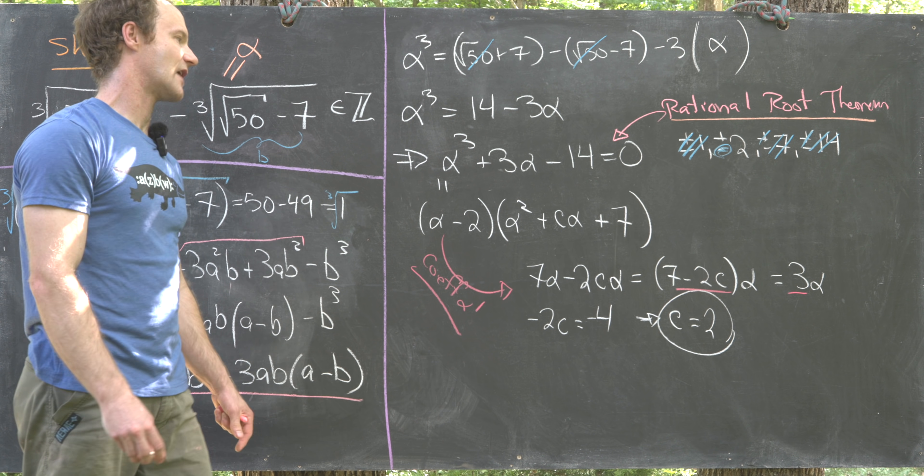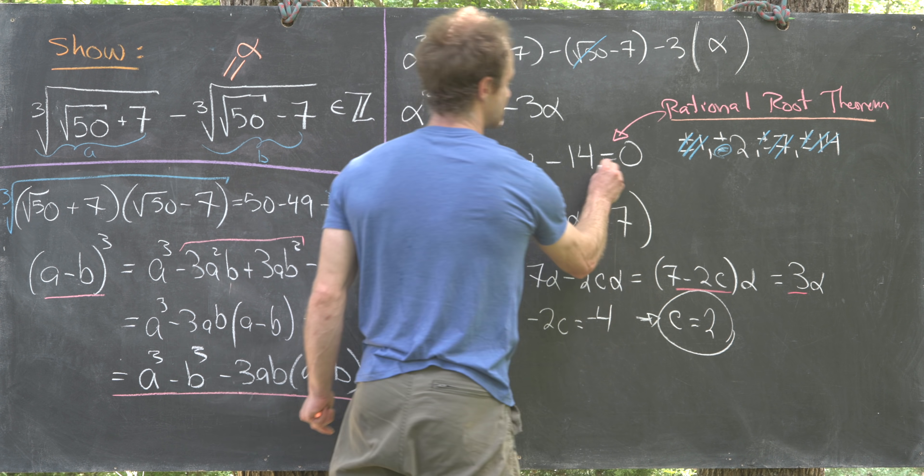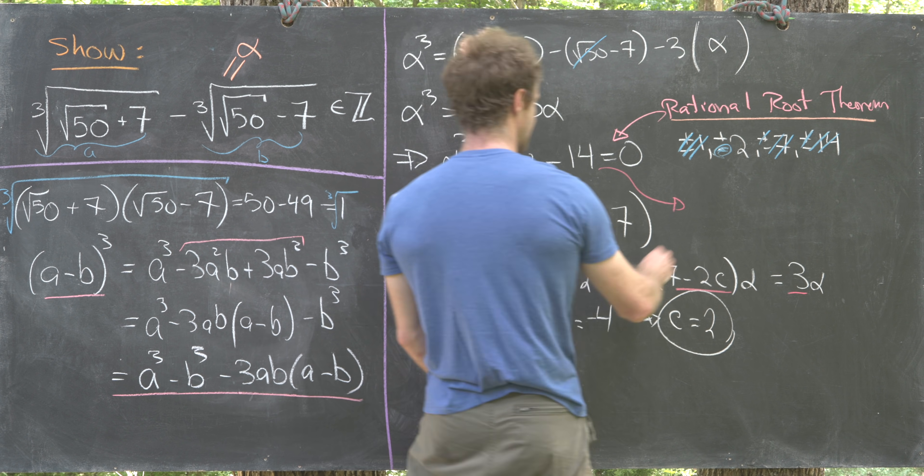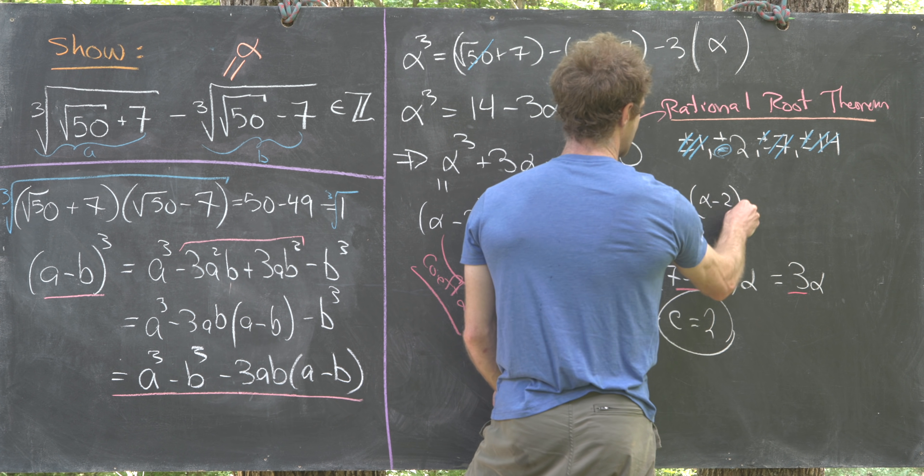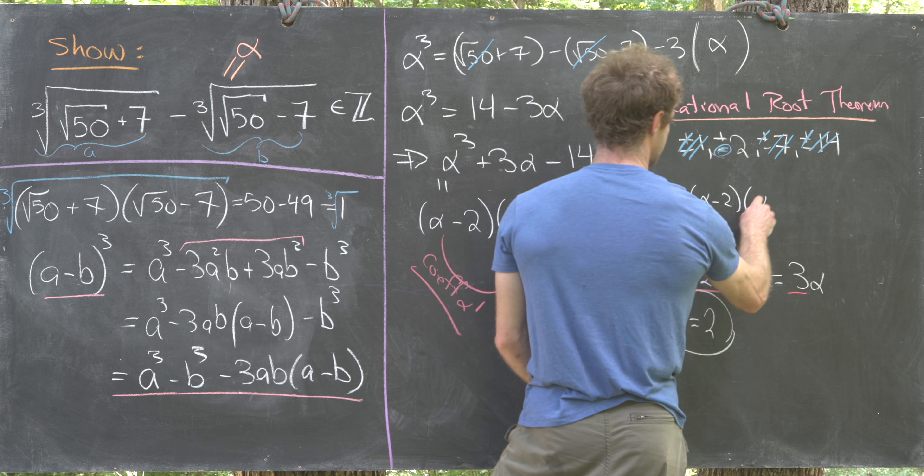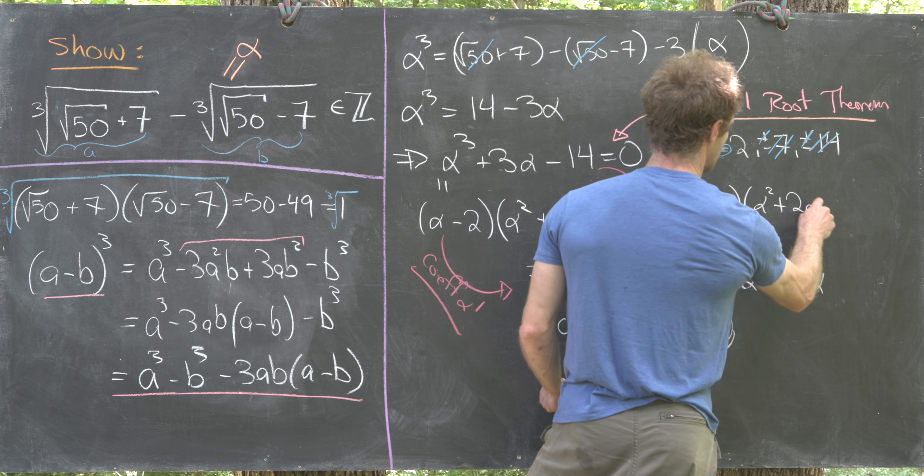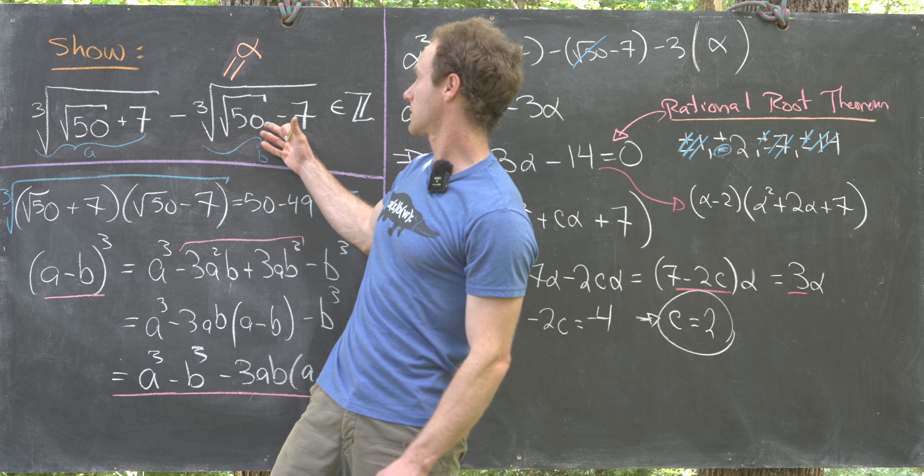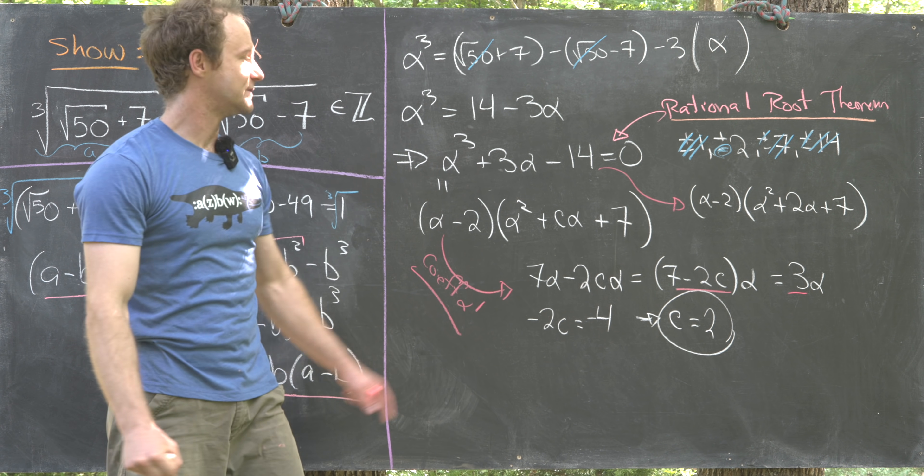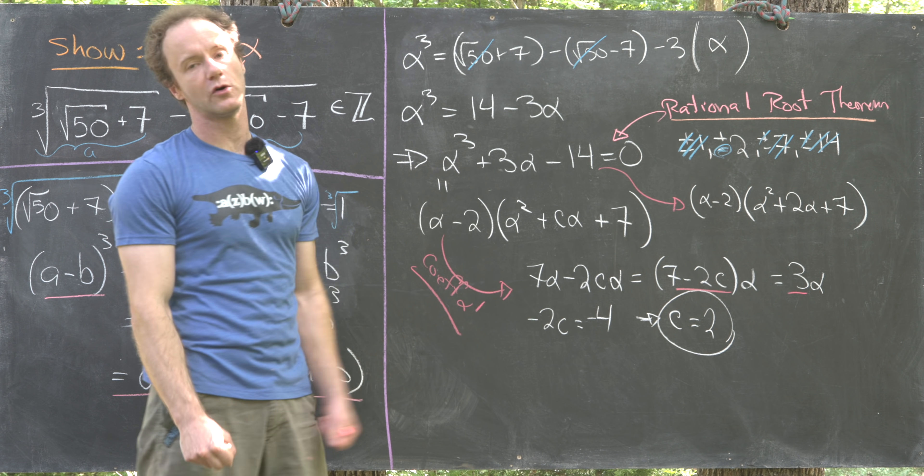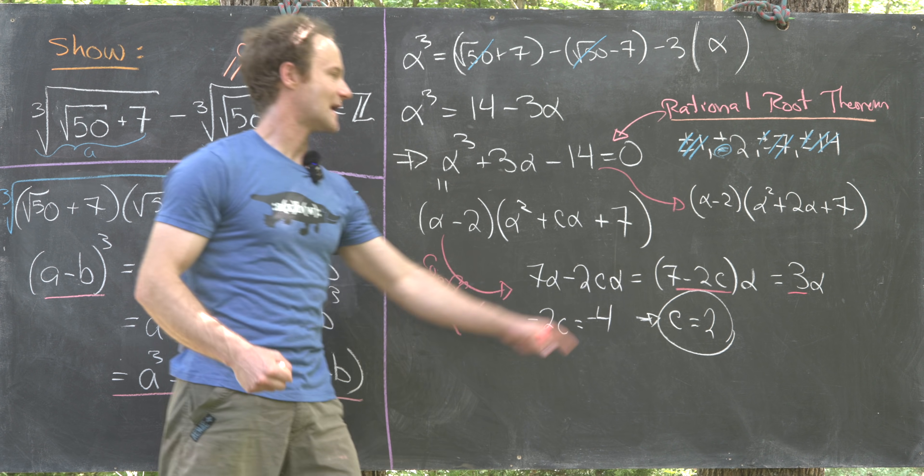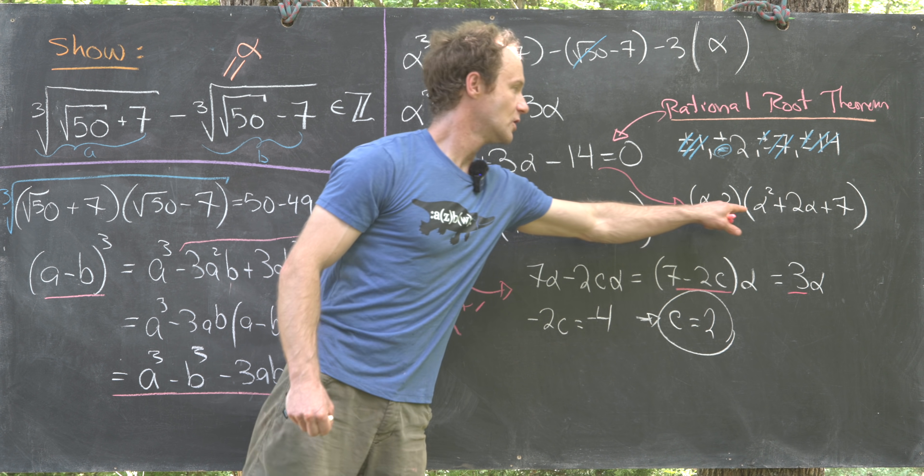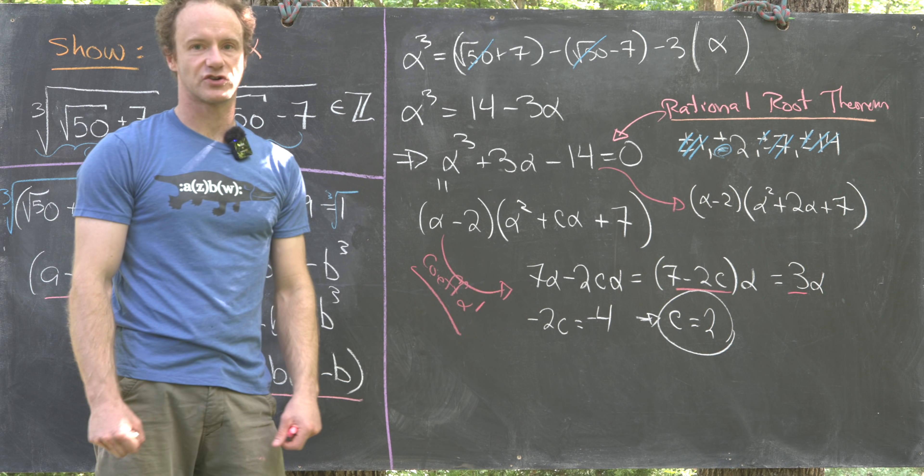That tells us exactly how this thing factors. In other words, this factors like alpha minus 2 times alpha squared plus 2 alpha plus 7. We know that our number alpha has to be a root of this cubic polynomial by our construction. That means it has to be either 2 or a root of this quadratic polynomial.